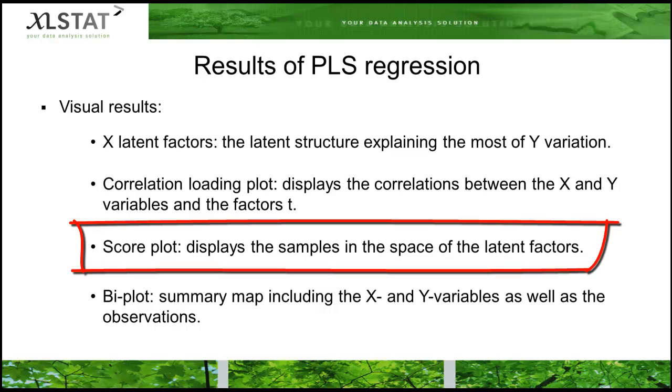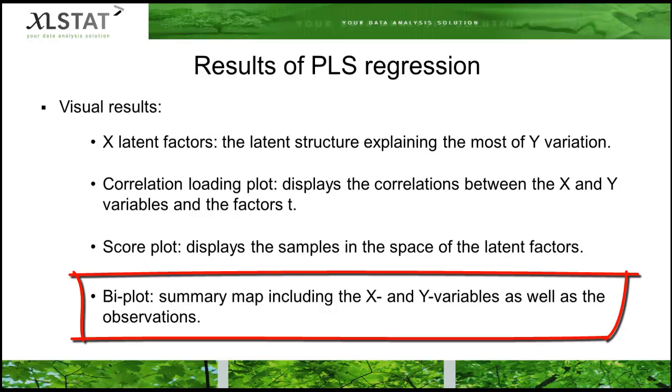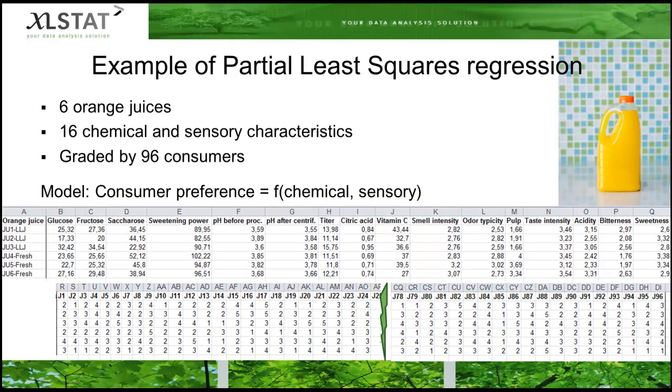Then we get the score plot that presents the samples in the space of the x factors. This makes it very easy to find groupings of similar samples. Finally, the biplot combines the information of the loading and score plots so that the groups of observation can be explained by the position of the x variables.